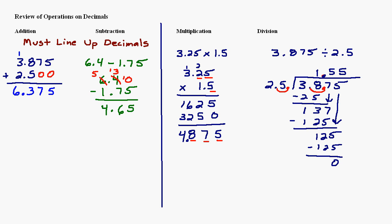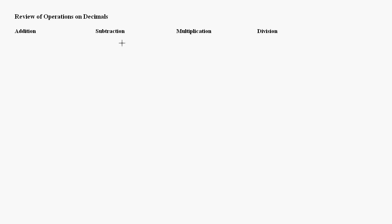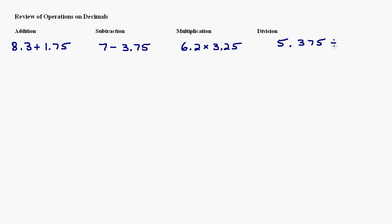Let's put up four practice examples. Pause the video and try these, then start it again to see how you did. The problems are: 8.3 plus 1.75 for addition; 7 minus 3.75 for subtraction; 6.2 times 3.25 for multiplication; and 5.375 divided by 0.25 for division.